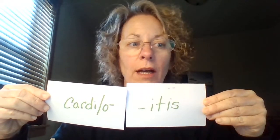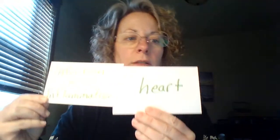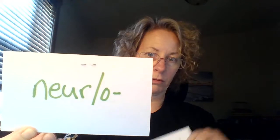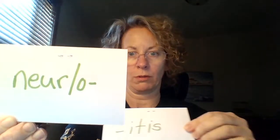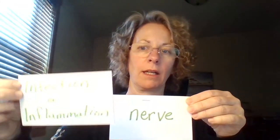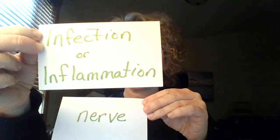If you combine the combining word cardio and the suffix itis, you get carditis, which is an infection or inflammation of the heart. Similarly, if you combine neuro with itis, you get inflammation or infection of the nerve.